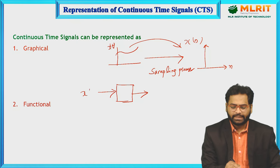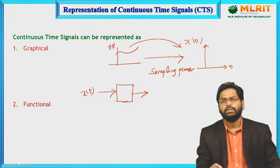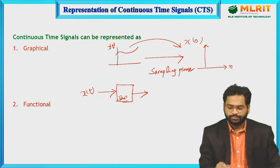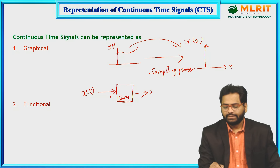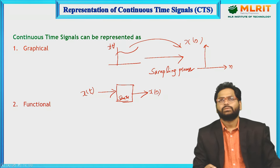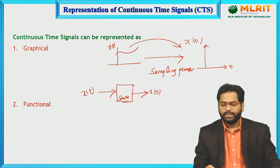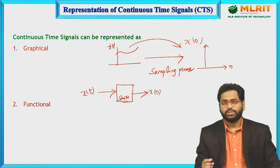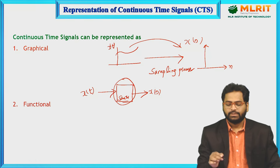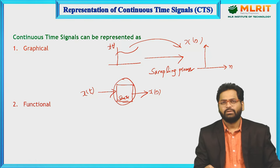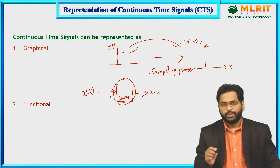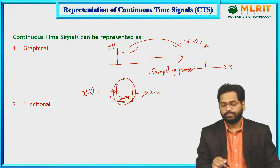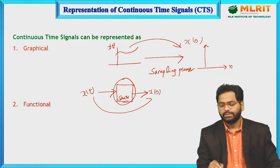We are giving x(t) as input to this sampling circuit and we are getting x(n) as output. In general, in the real world we will have only continuous time signals, not discrete time signals. To get the discrete time signals, we are converting the signal from continuous into discrete time.